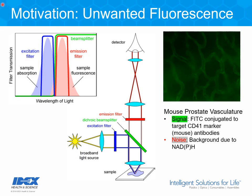In fluorescence microscopy, fluorophores are used to provide image contrast. These fluorophores absorb light, become excited, and then emit or fluoresce at higher wavelengths. In a typical system, an excitation filter defines the wavelength range over which excitation occurs, an emission filter defines the wavelength range over which fluorescence is detected, and a dichroic beam splitter reflects the excitation light and transmits the emission light.